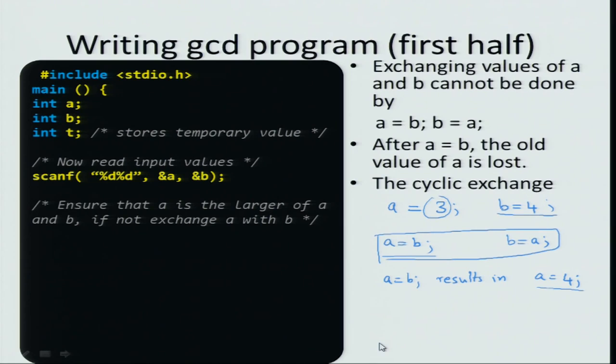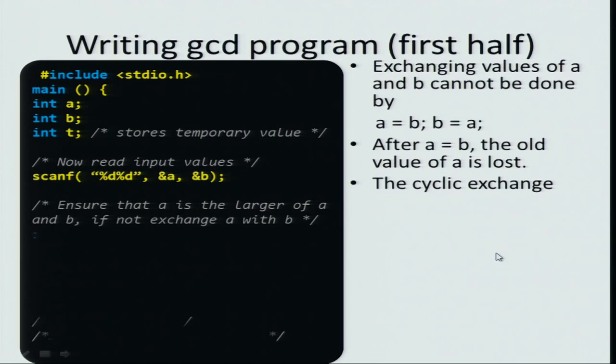What is the correct way to do it? We have an idea known as cyclic exchange, and this is a really neat idea. Let us say you have two rooms and these two rooms are full of stuff, and I want to change the contents of one room to the other. One way is to move the contents of the first room to a temporary room, then copy the contents of the second room to the first, and copy the contents of the third room to the second. This is a very nice intuition and it is similar to what we need to do.